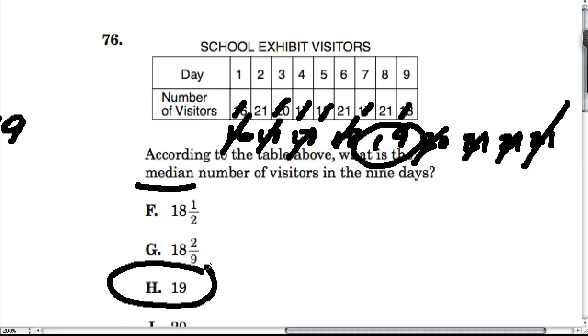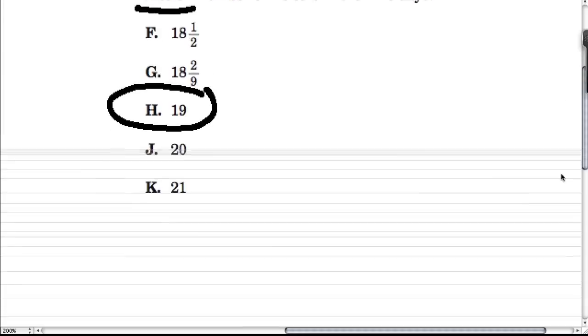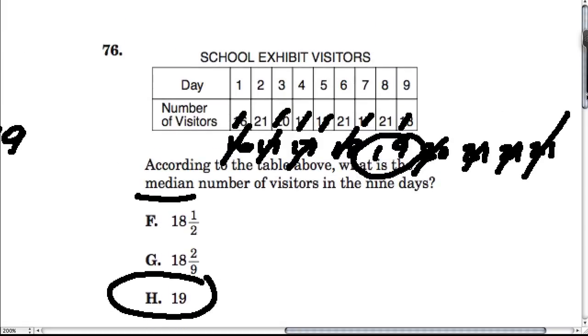Now if there are two numbers in the middle, you would just add them up and divide by 2 to find the average of those two numbers. And that's it for now.